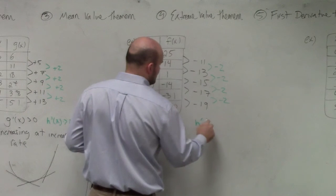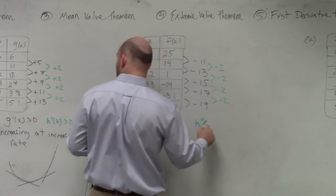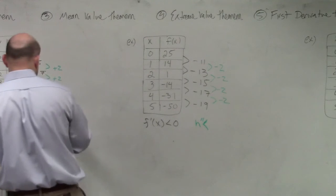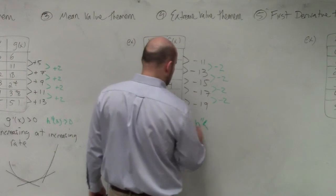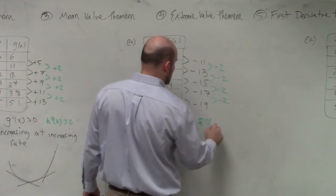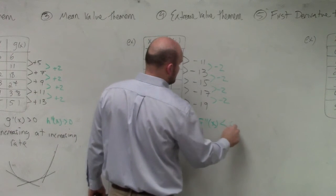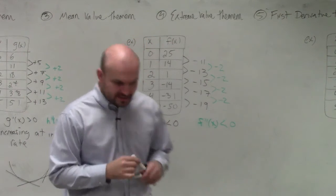And h prime, or h double prime of x. Oops, I should have wrote that as a double prime over there. h double, oops, not f. f double prime of x is also less than 0. So in this example,